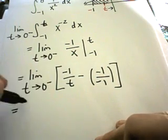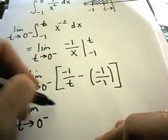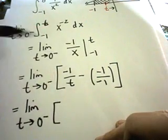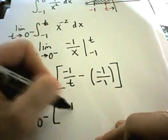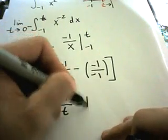And this simplifies down to the limit as t approaches zero from the left. We're going to get negative one over t. The two negatives will make a positive, so I have minus one.